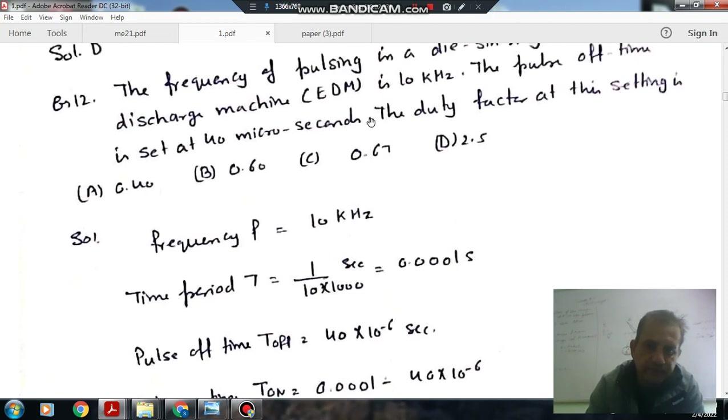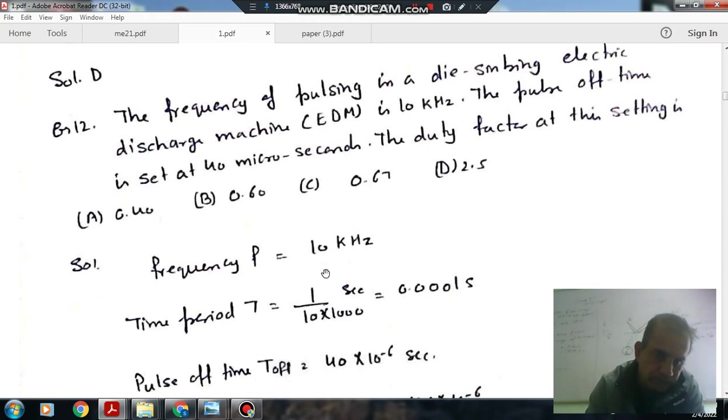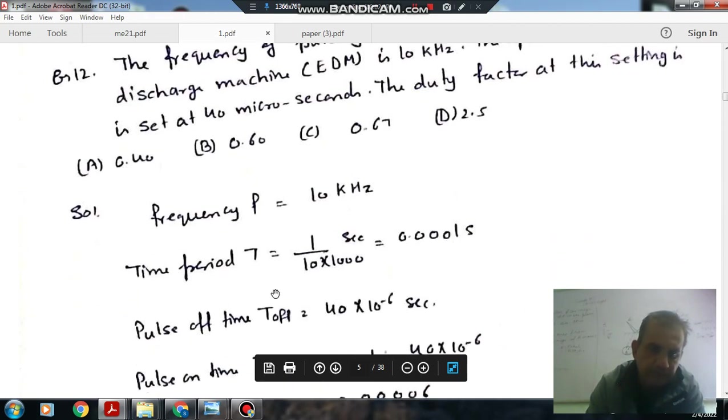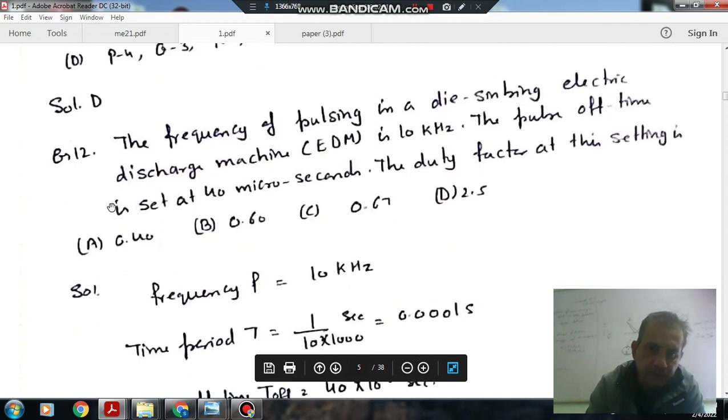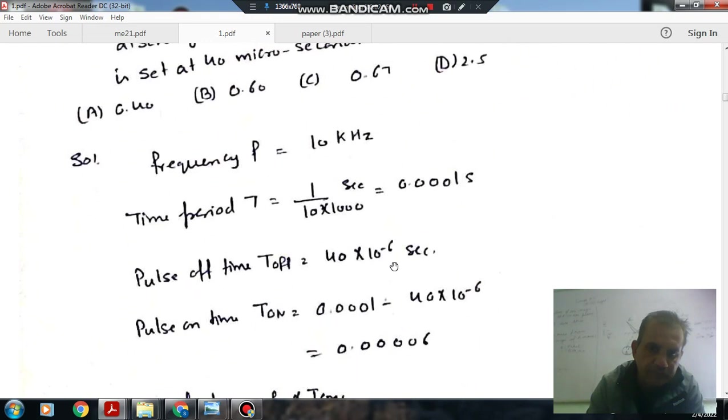Frequency is 10 kHz. Time period is the inverse of frequency, so that is 1 by 10 into 1000. Time period is 0.0001 seconds. Now pulse off time is 40 microseconds.